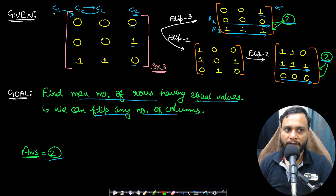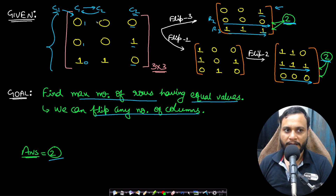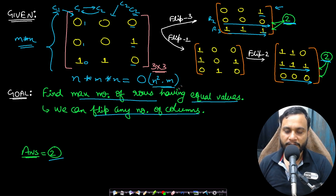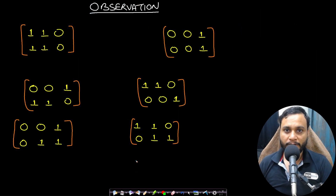A simple approach would be to flip all elements of one column, then traverse the entire matrix of size m by n to count how many rows have all equal values. Repeat this for every column — there are n columns, and the matrix is m by n — so the time complexity of this brute force approach is O(n² × m).